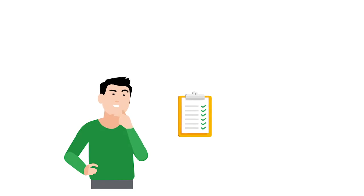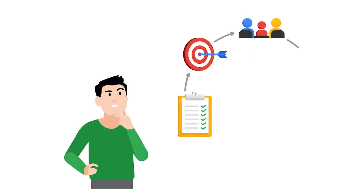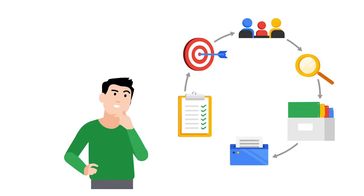The life cycle of data is: plan, capture, manage, analyze, archive, and destroy. Let's start with the first phase: planning.